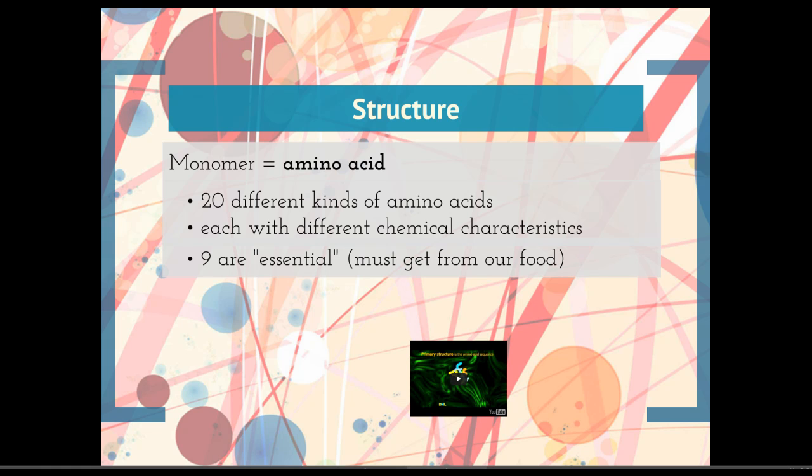Nine are essential. When you say something is an essential nutrient, an essential amino acid, that means you have to get it from your food. Our body is not able to build it.